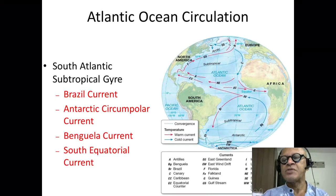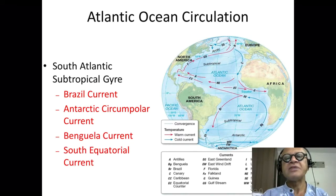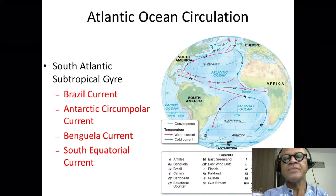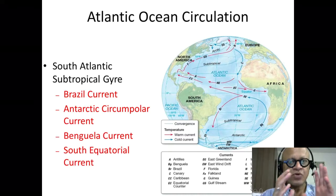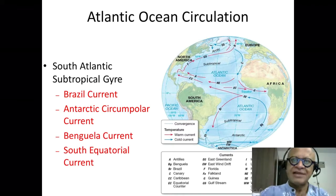The other thing to remember here is why there is a cross-equatorial flow. Remember that the Atlantic Ocean has North Atlantic Deep Water formation in the North Atlantic — Greenland, Iceland, Norwegian seas — and there is a mass transport and heat transport across the equator to feed the water that's sinking. Again, mass balance.